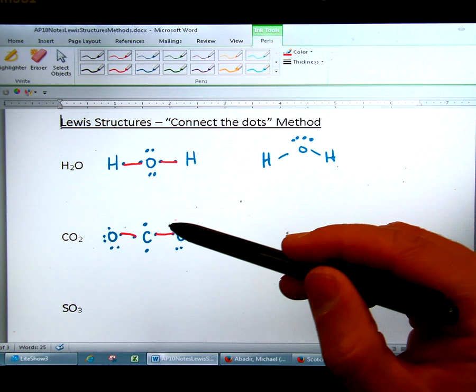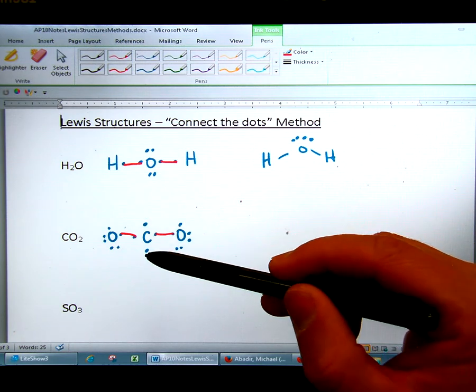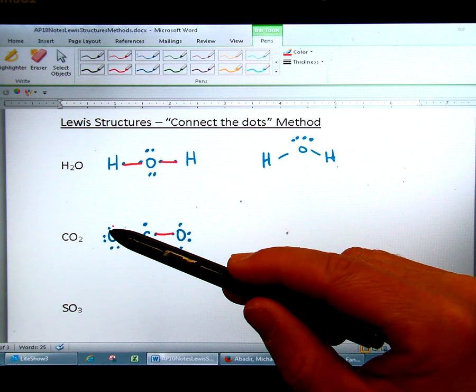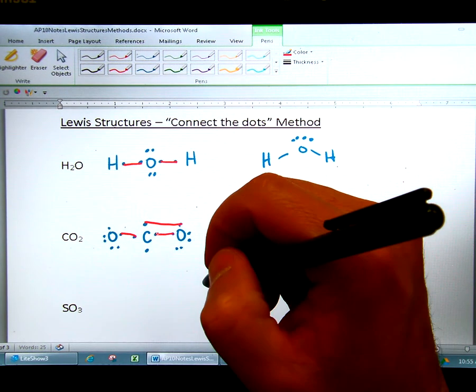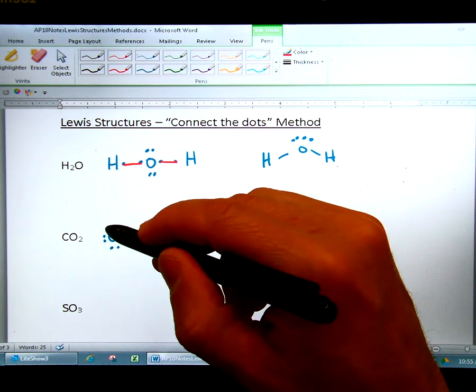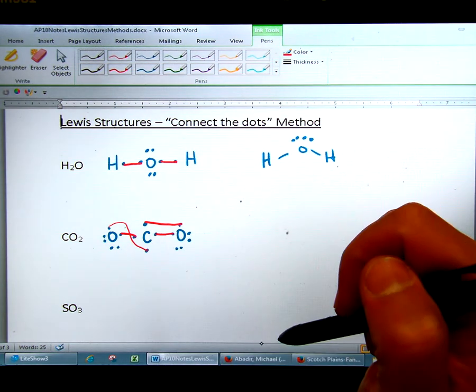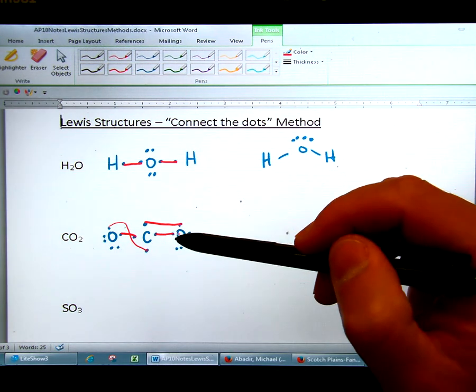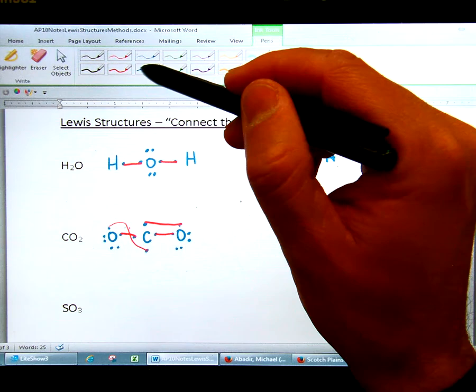Because this oxygen still has a single electron right here. This C has a single, this C has a single, and this O has a single. So what you can do is continue to connect singles like this, and even like this, you can connect. Now, this is a rough copy, so you're never going to write this as a final answer, but this is to help you understand that C and O double bond on the right.